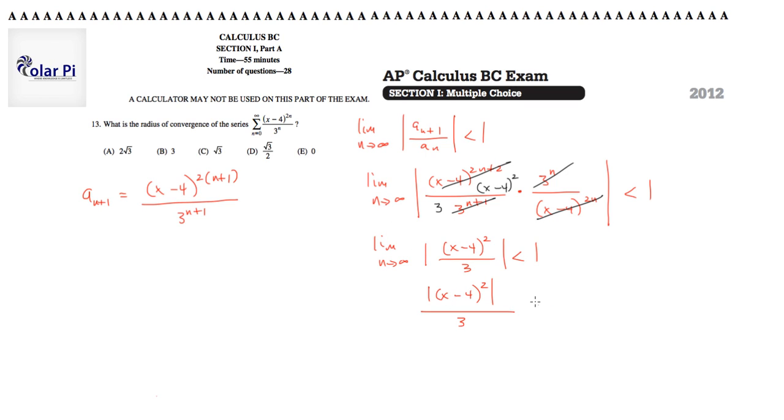At this point, I'll multiply both sides of that inequality by 3 and observe that the absolute value of x minus 4 squared will have to be less than 3.